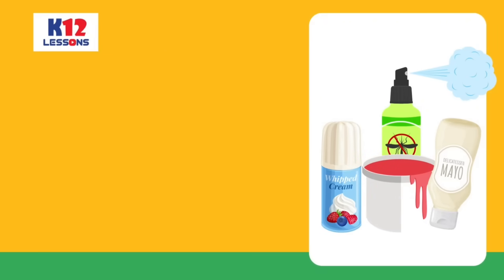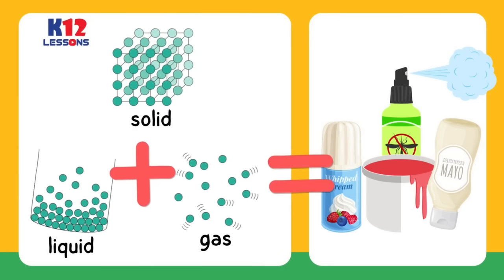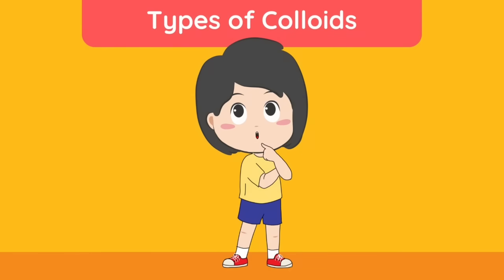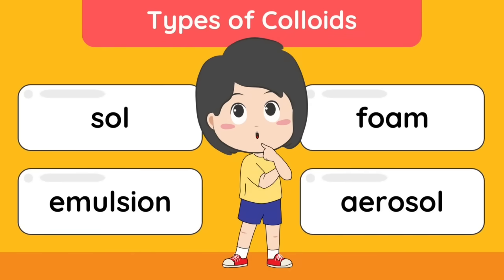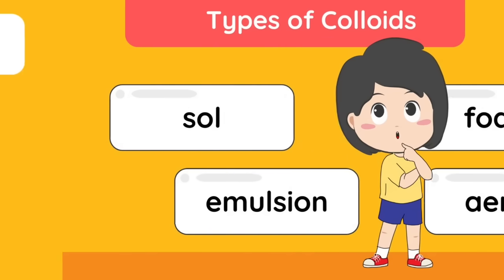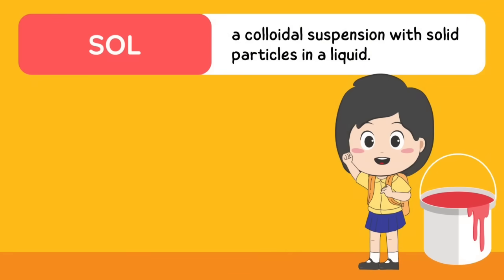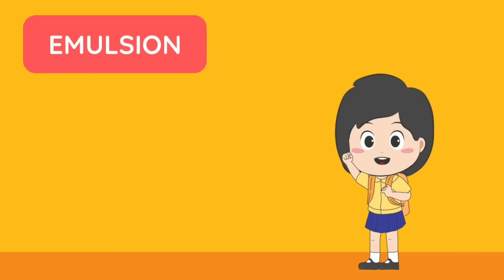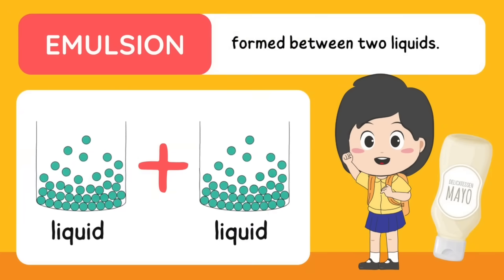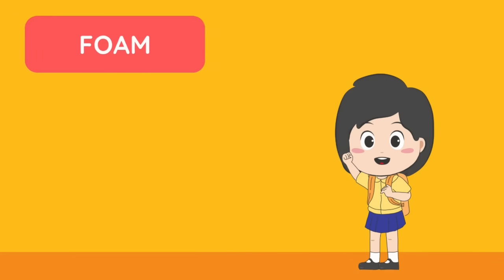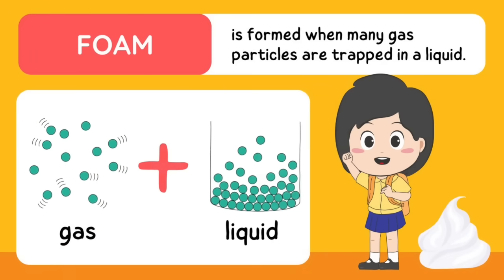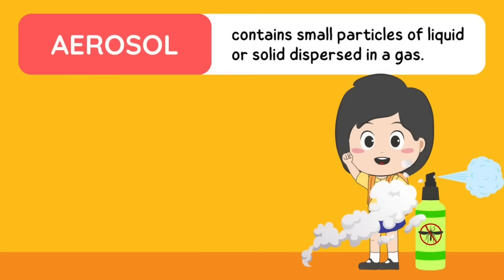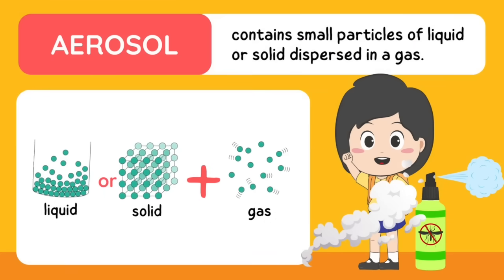Different types of colloids can be formed from the combination of various phases of matter. The types of colloids are sol, emulsion, foam, and aerosol. Sol is a colloidal suspension with solid particles in a liquid. Emulsion is formed between two liquids. Foam is formed when many gas particles are trapped in a liquid. Aerosol contains small particles of liquid or solid dispersed in a gas.